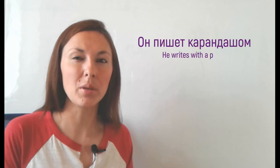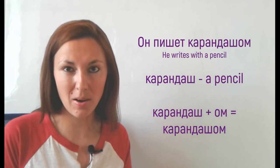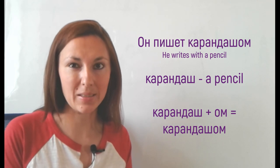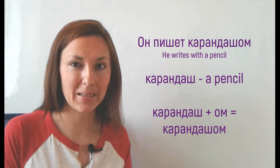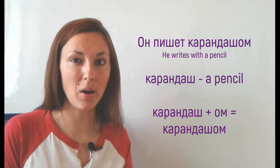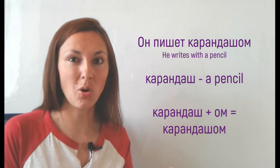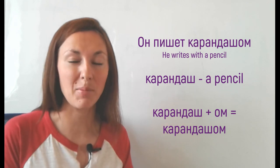For example, он пишет карандашом. Карандаш is a masculine noun. We add ending ОМ and we get a noun in instrumental case, карандашом. Карандаш, a pencil, is a tool here. That is why instrumental case is called instrumental, because instrument, a tool, gives the name of that case.